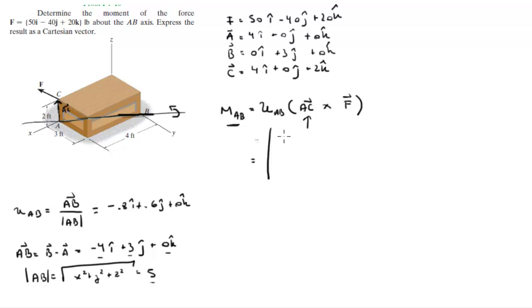Now that you have the unit vector, we can put it in our matrix: negative 0.8, that's an 8, 0.6, and 0.